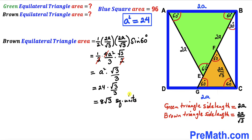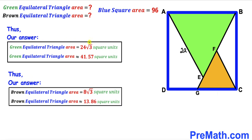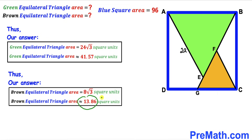After all calculations, the green equilateral triangle area is 24√3 square units, which is approximately 41.57 square units. The brown equilateral triangle area is 8√3 square units, which is approximately 13.86 square units. Thanks for watching and please don't forget to subscribe to the channel for more exciting videos. Bye!